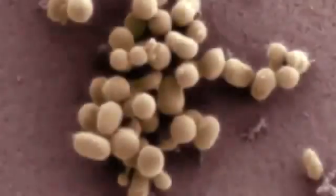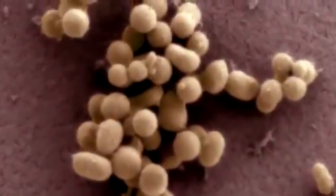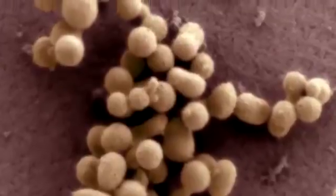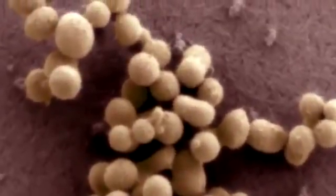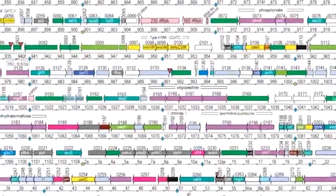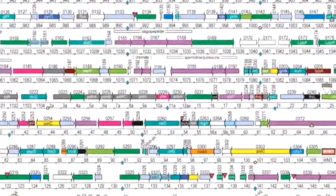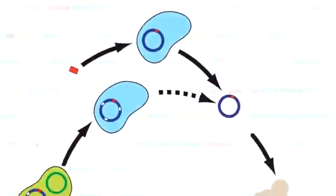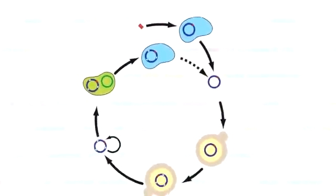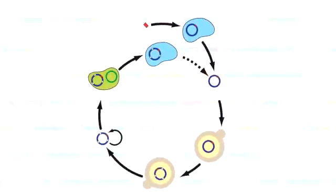They created the first computer-designed, synthetically produced genome, which is the set of application programs for an organism. This artificial DNA had over one million letters of genetic code that were then read, processed, and executed by the computer systems in the target cell's nucleus.